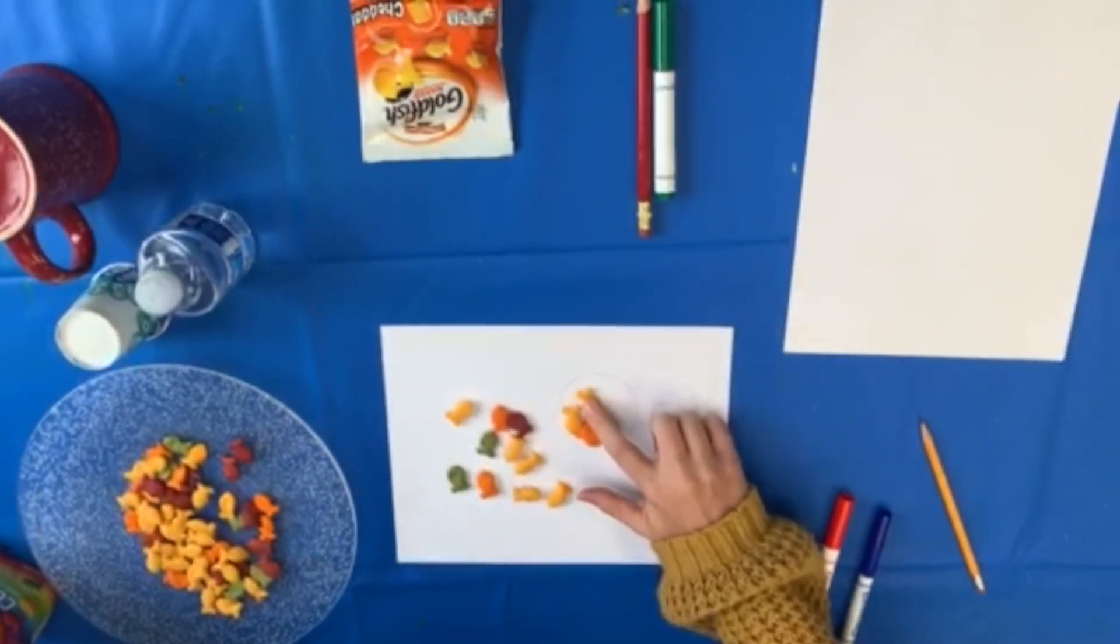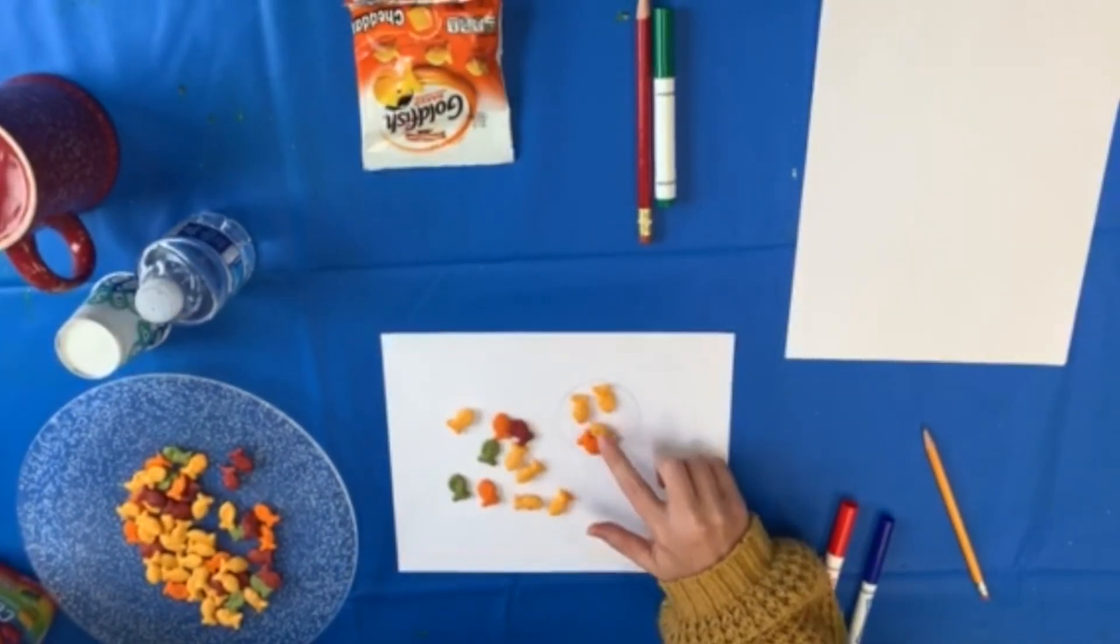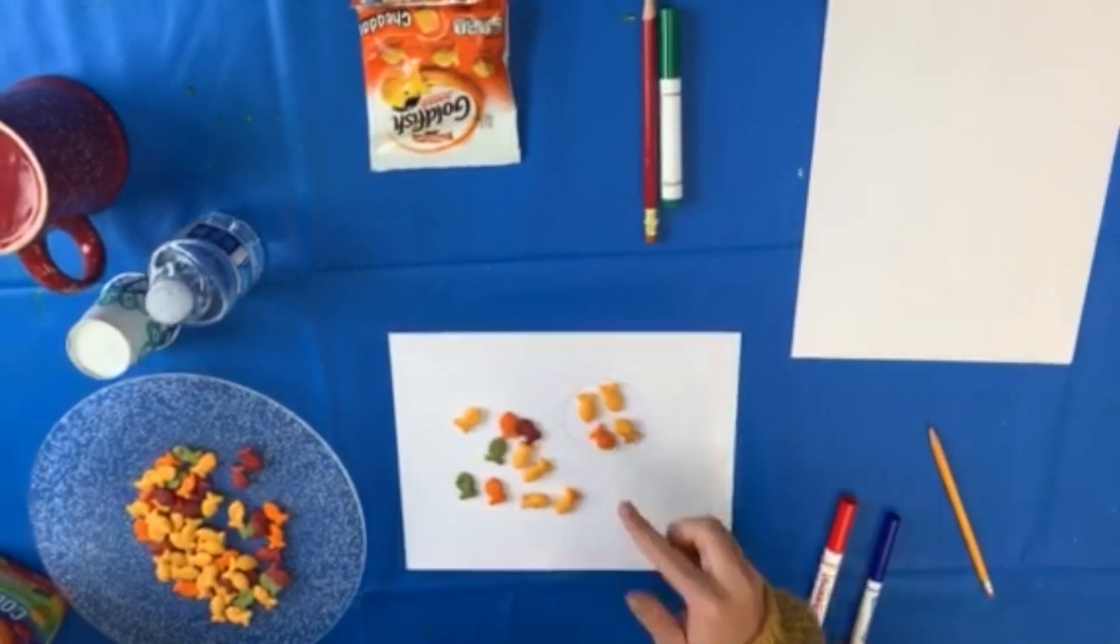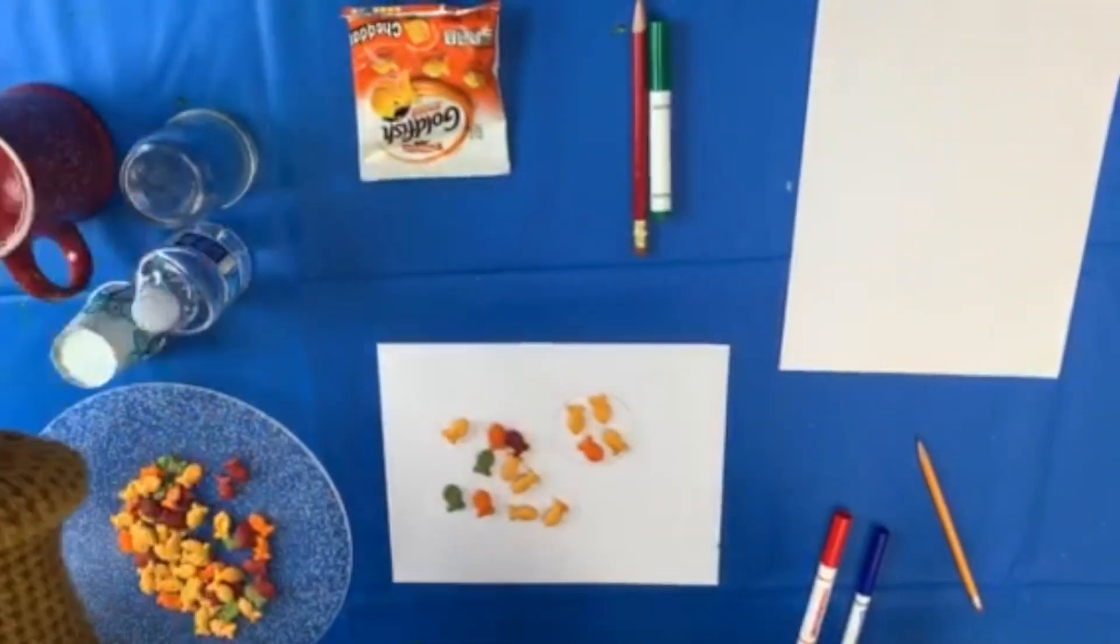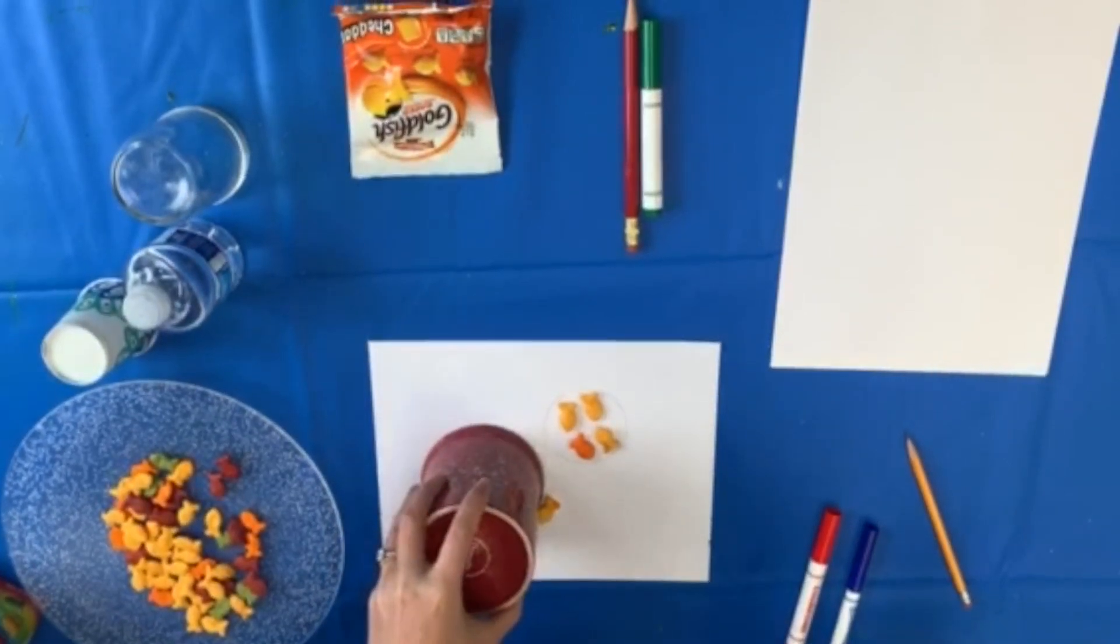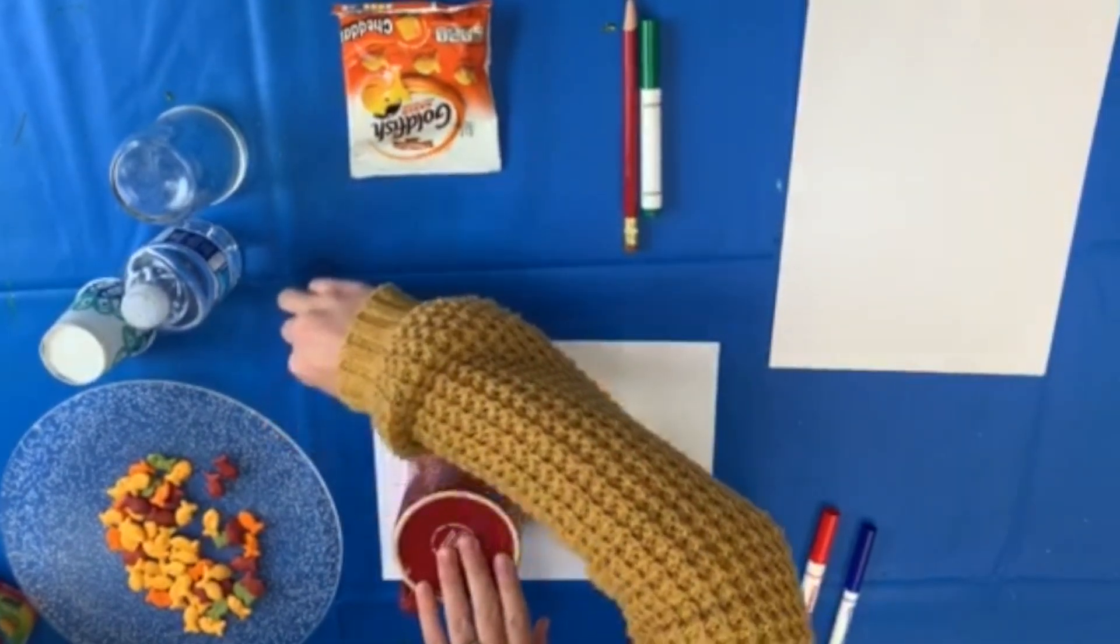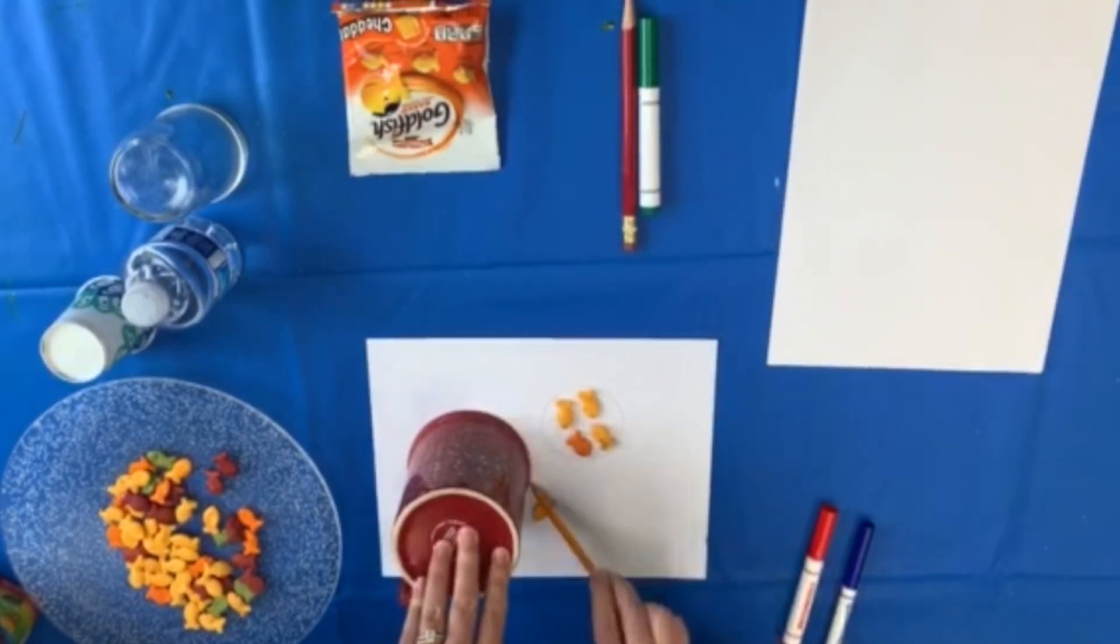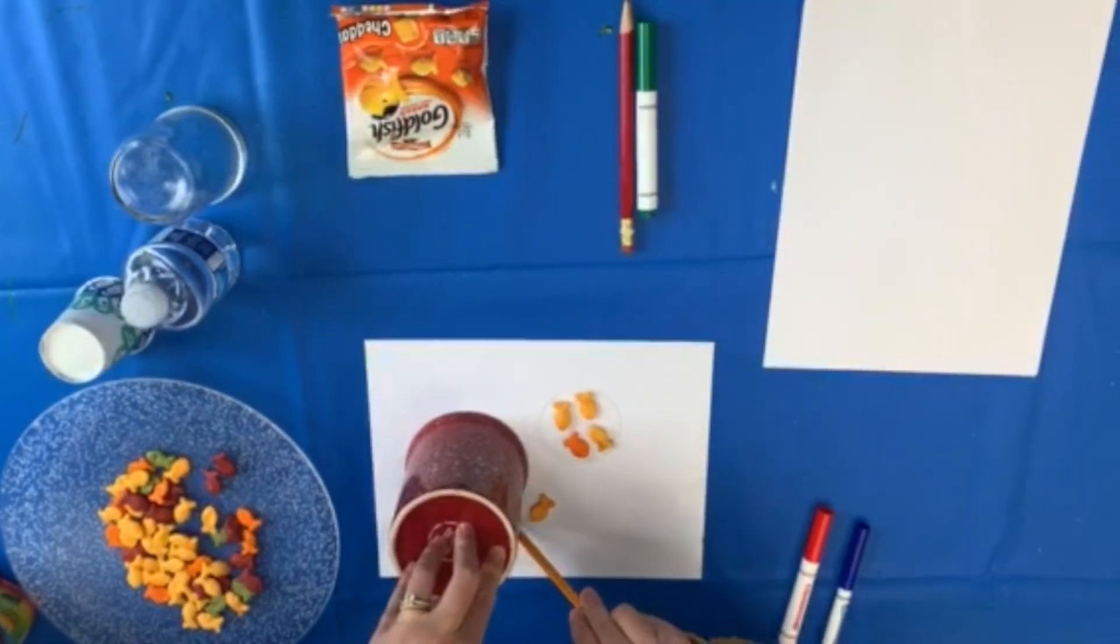Let's count together. One, two, three, four. Now let's try again using the bigger cup. Try not to crunch them. All right, take your pencil and go around, all the way around.